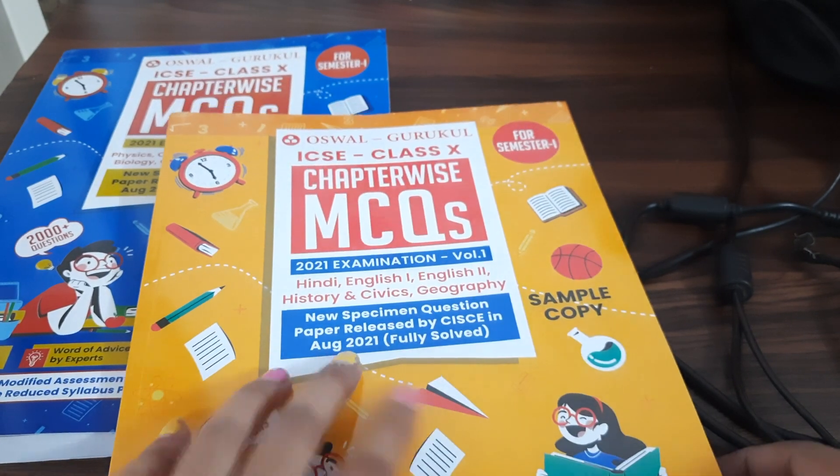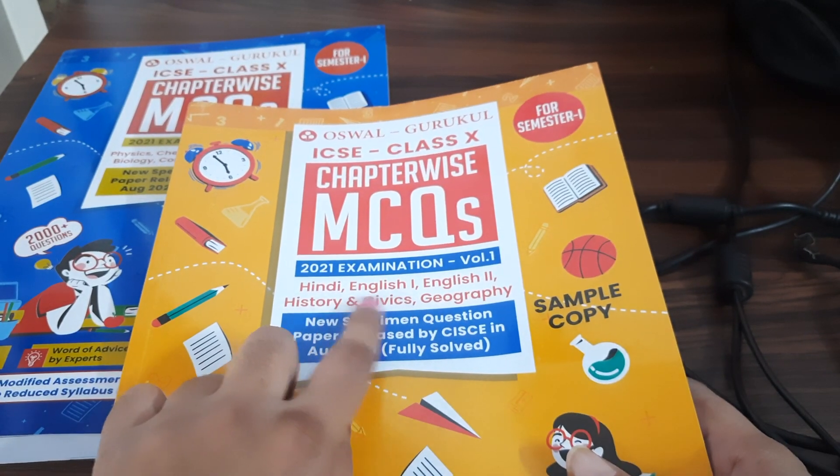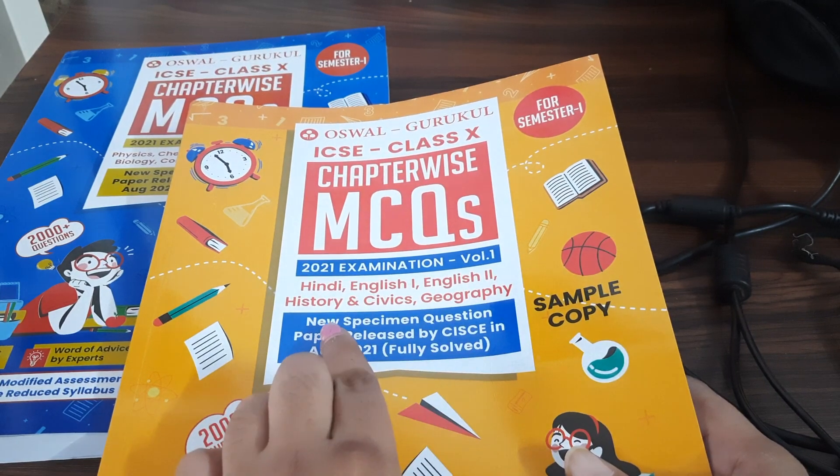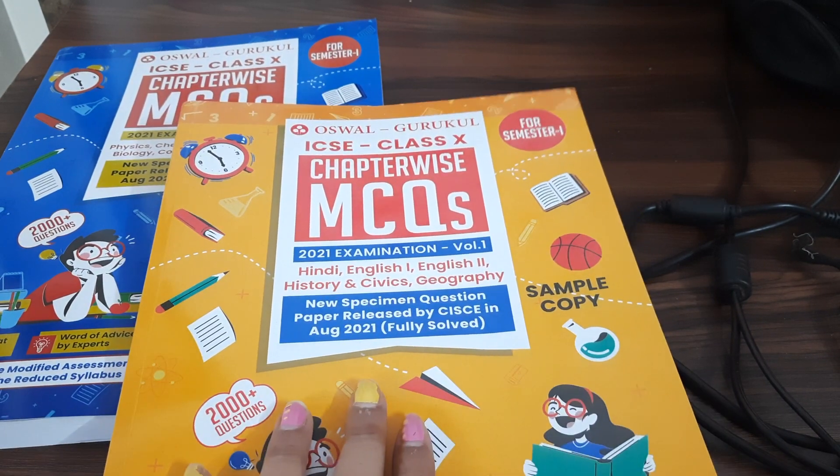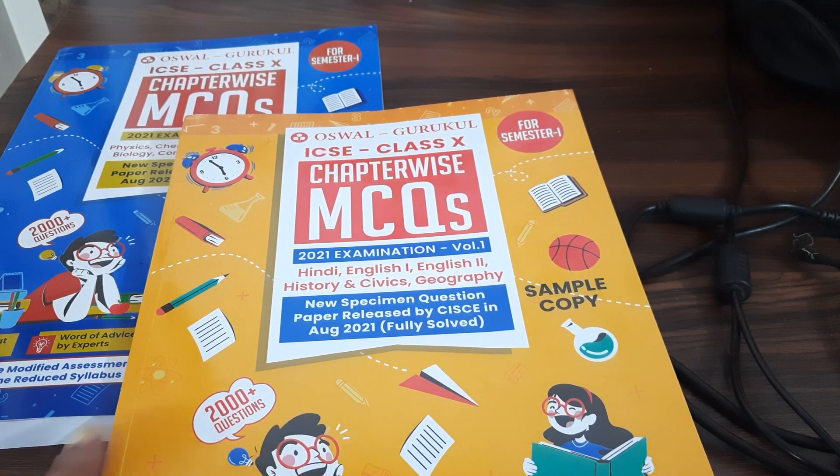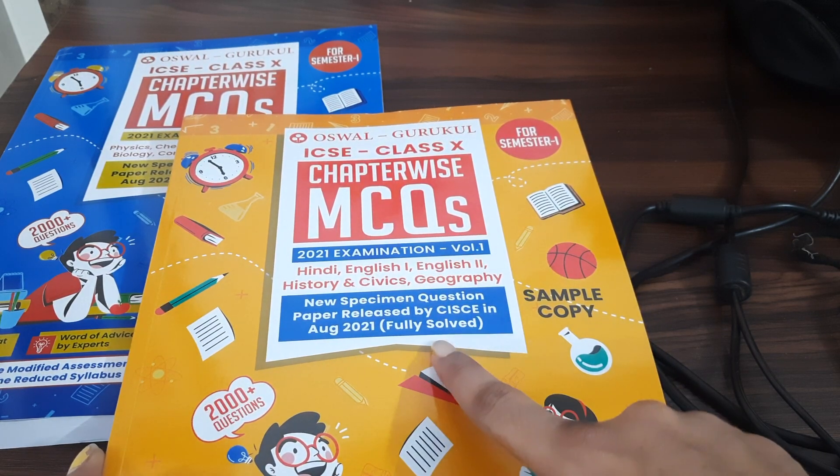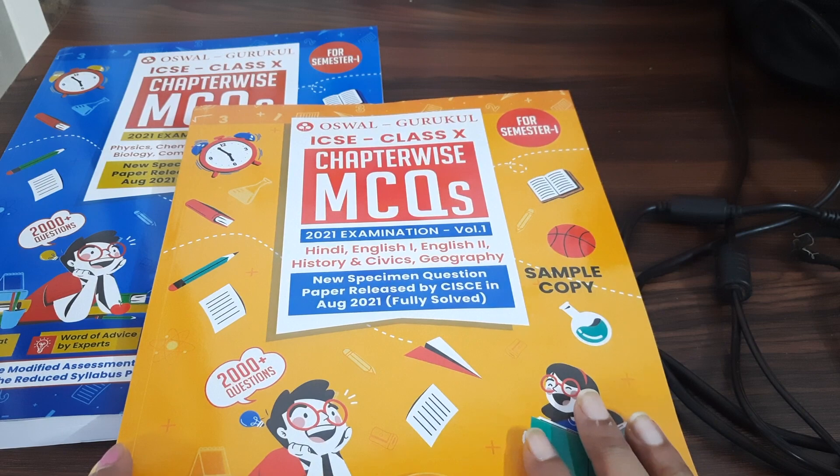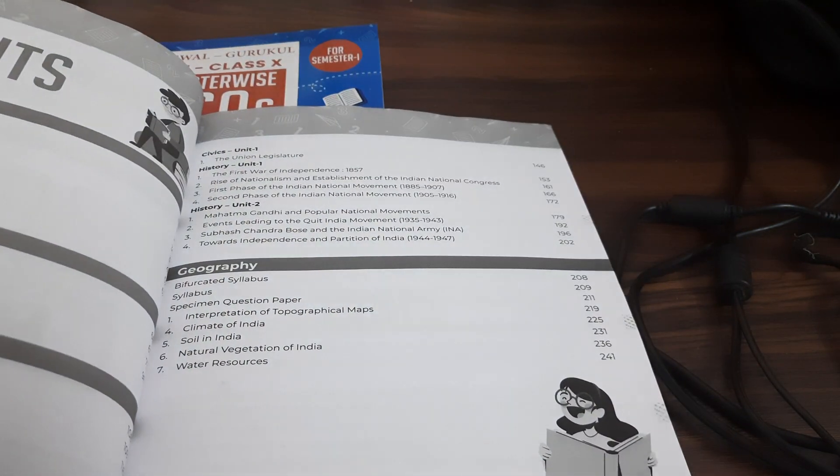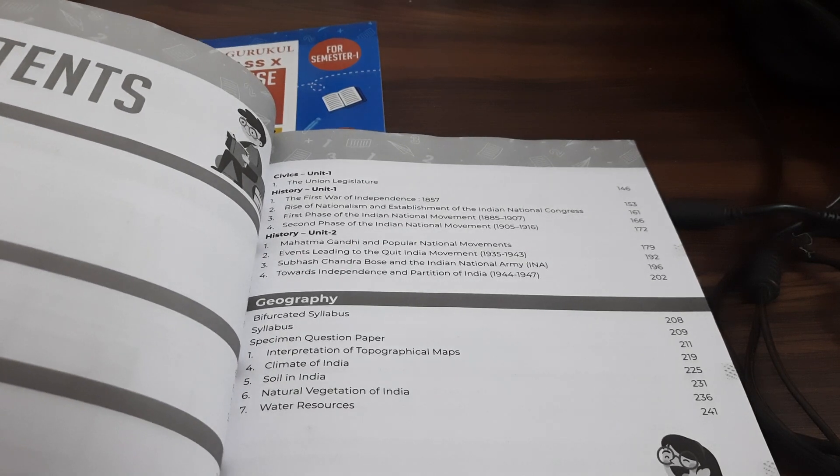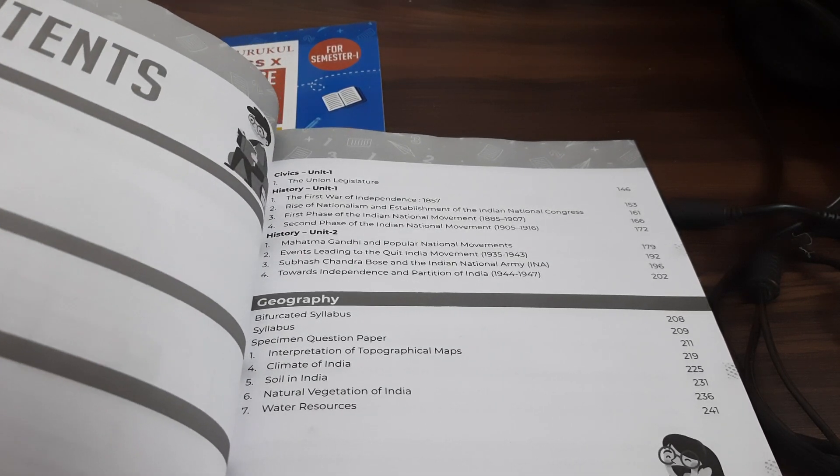So, this book, the yellow one contains Hindi, English 1, English 2, History and Civics and Geography. This is also the new specimen question paper released by CISCE in August 2021. Fully solved. Specially, I liked it for Hindi. And even for Merchant of Venice, I liked it really well.